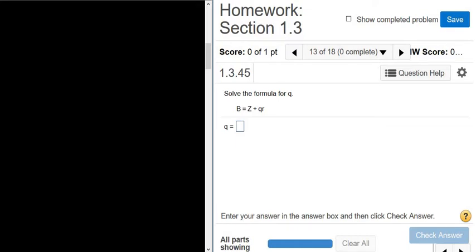Solve the formula for q. So I'm going to go ahead and write the problem over here. So we have B equals Z, that's a big Z, plus q, r. My q's have little tails on them, so they don't look like 9's.